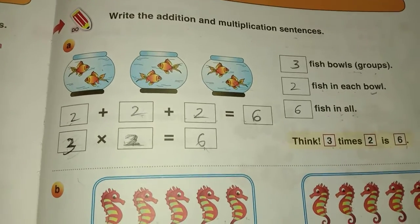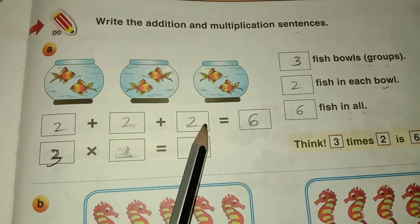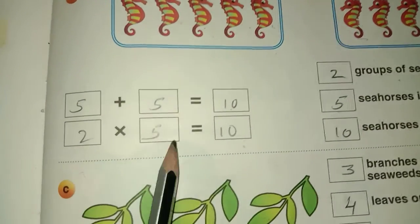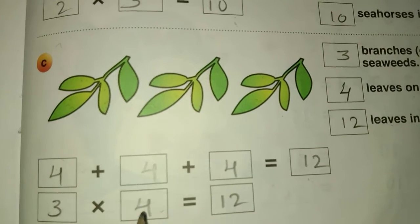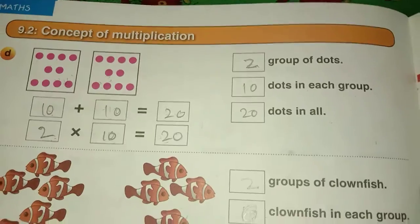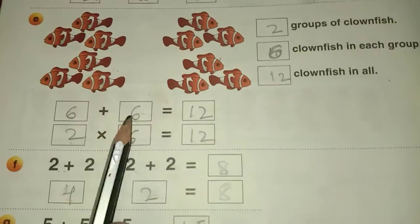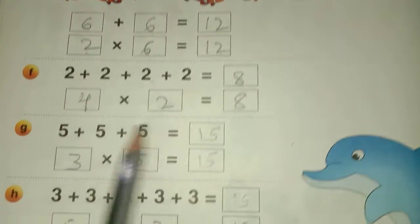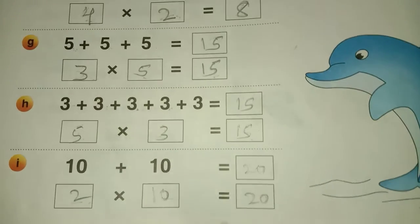We have already studied that repeated addition equals multiplication: 2 + 2 + 2 = 6, so 3 into 2 is 6. 5 + 5 = 10, so 2 into 5 is 10. 4 + 4 + 4 = 12, so 3 into 4 is 12. Similarly, 10 + 10 = 20 gives 2 times 10 is 20; 6 + 6 = 12 gives 2 times 6 is 12; 4 times 2 is 8; 3 times 5 is 15; 2 times 10 is 20.